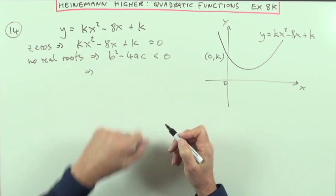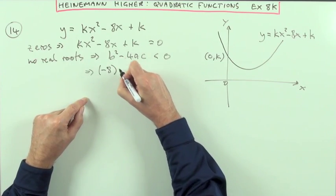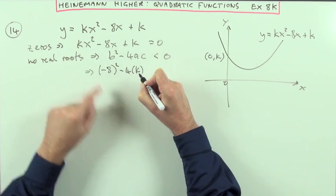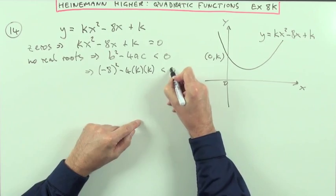And it's all quite clear of the various parts. So b, coefficient of x, that's negative 8 squared minus 4 times a is k, the coefficient of x squared. c is k again at the end. That should be less than zero.